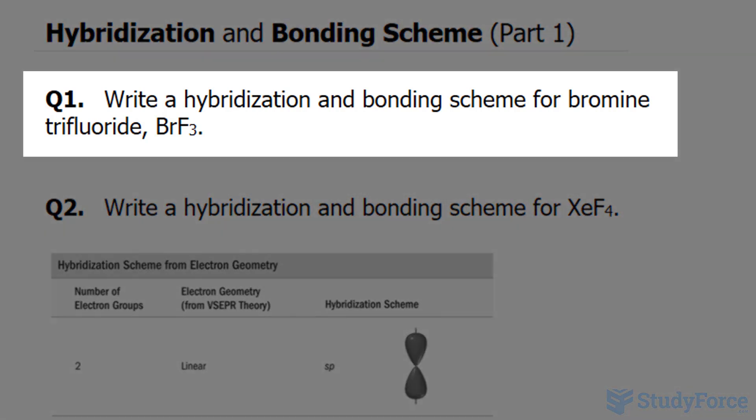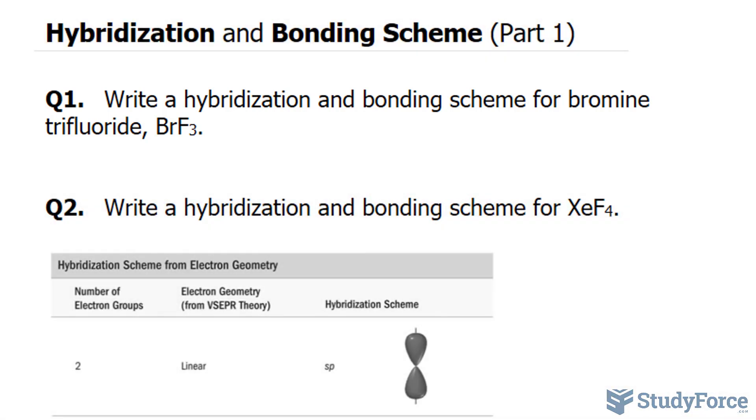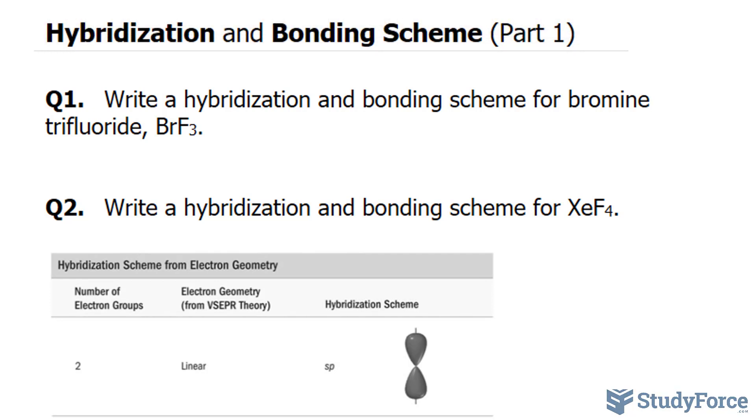The question reads: write a hybridization and bonding scheme for bromine trifluoride, which has the chemical formula BrF3. Keep in mind that in chemistry, orbital hybridization is the concept of mixing atomic orbitals into new hybrid orbitals. And these new hybrid orbitals make it suitable for the pairing of electrons to form chemical bonds according to the valence bond theory.